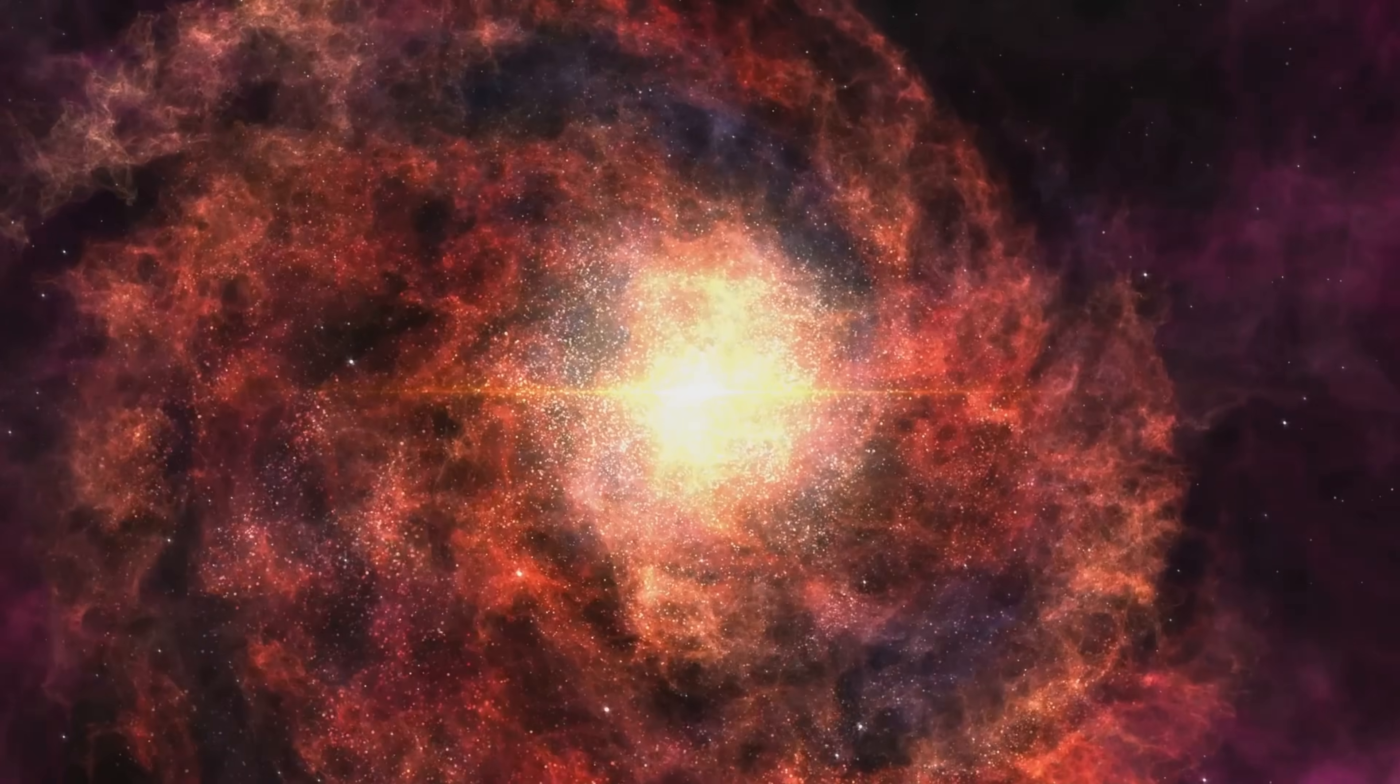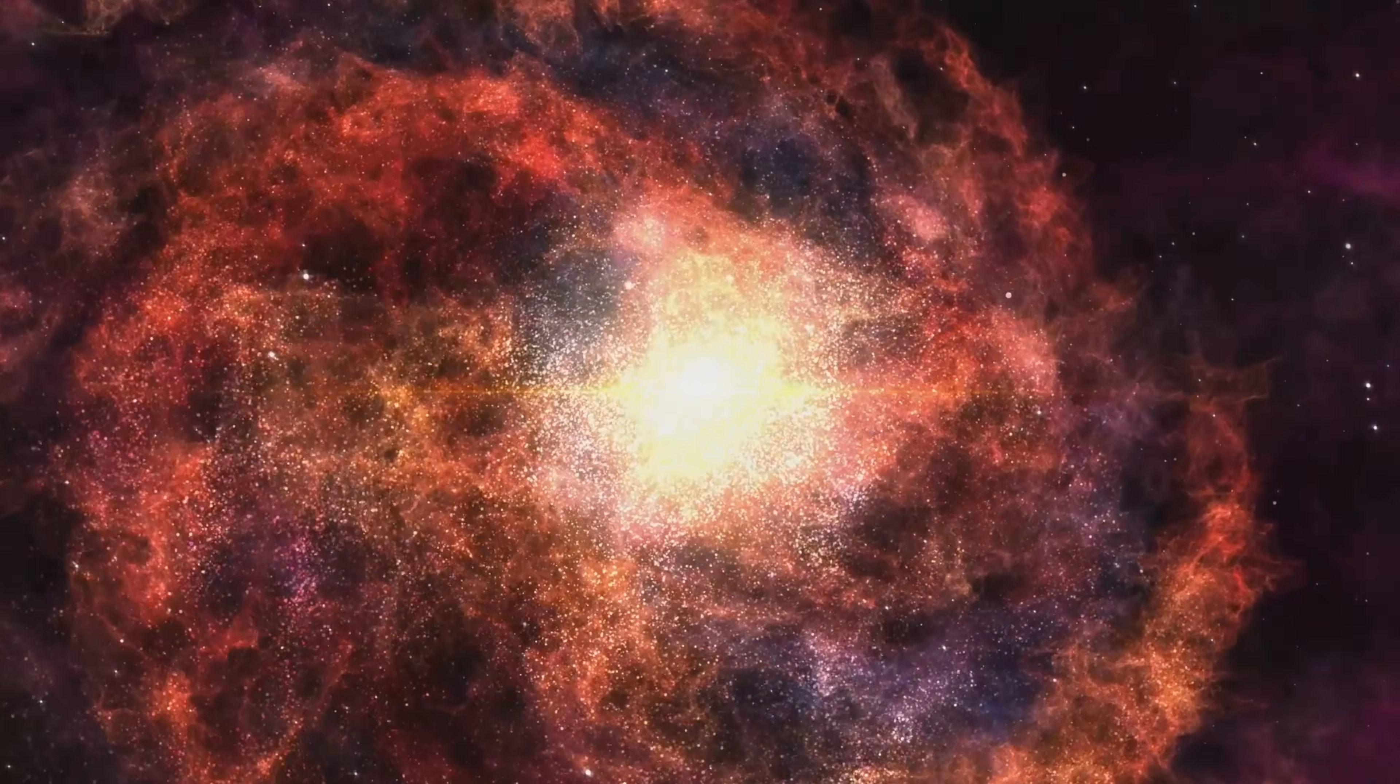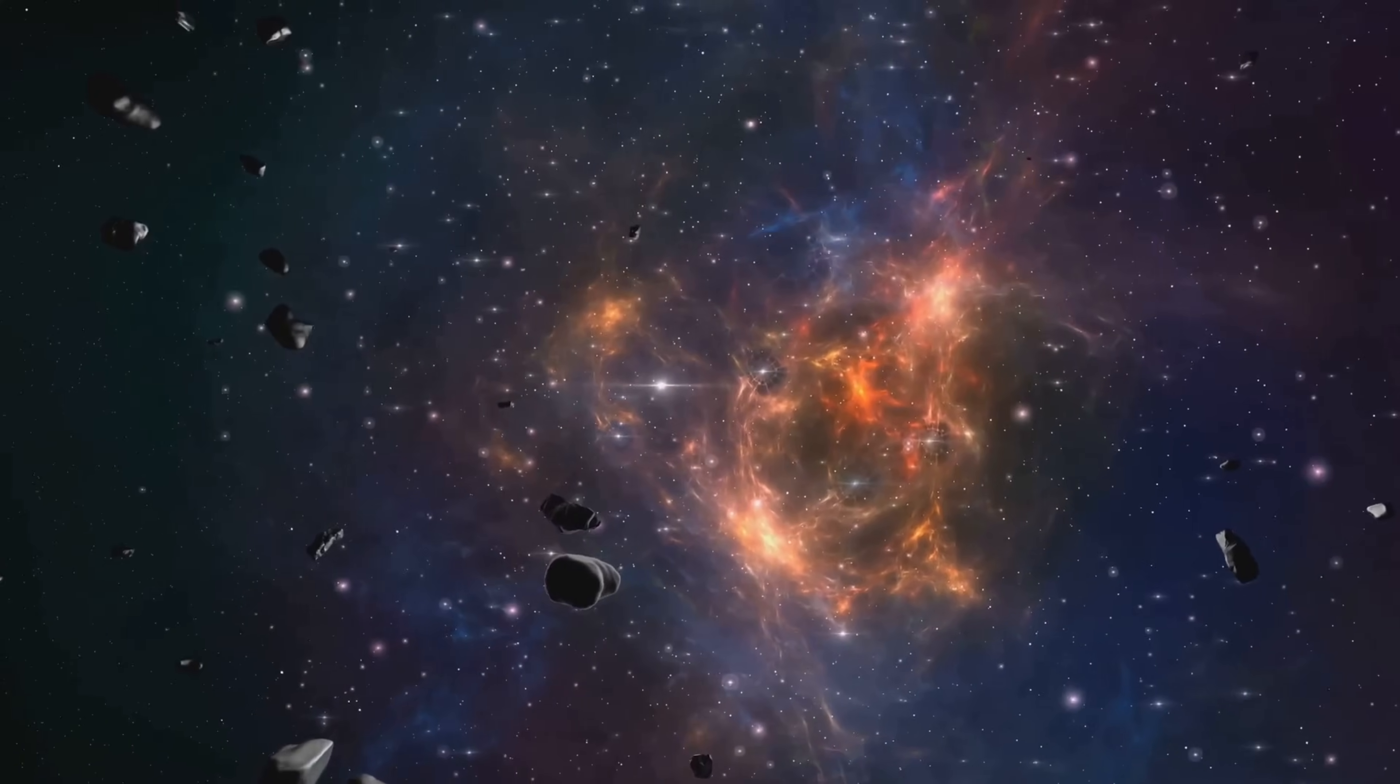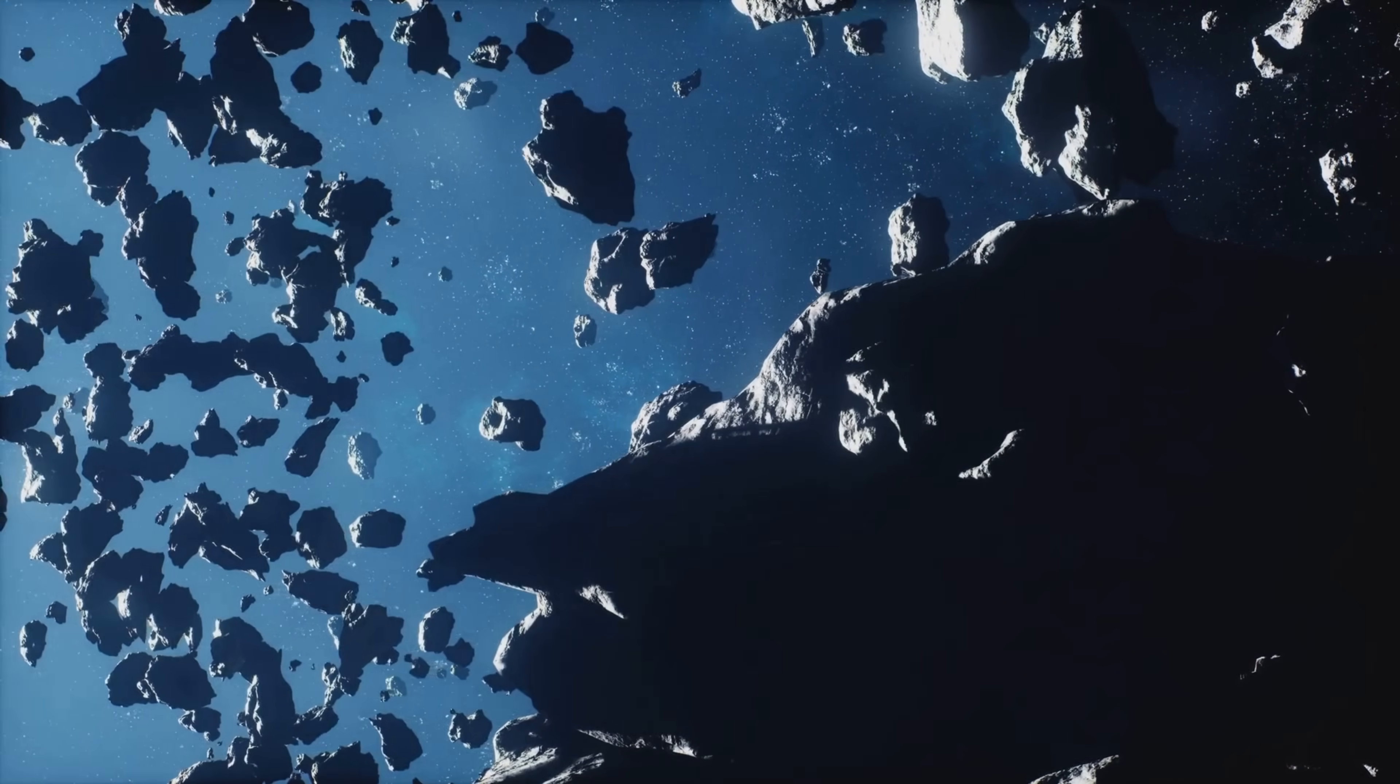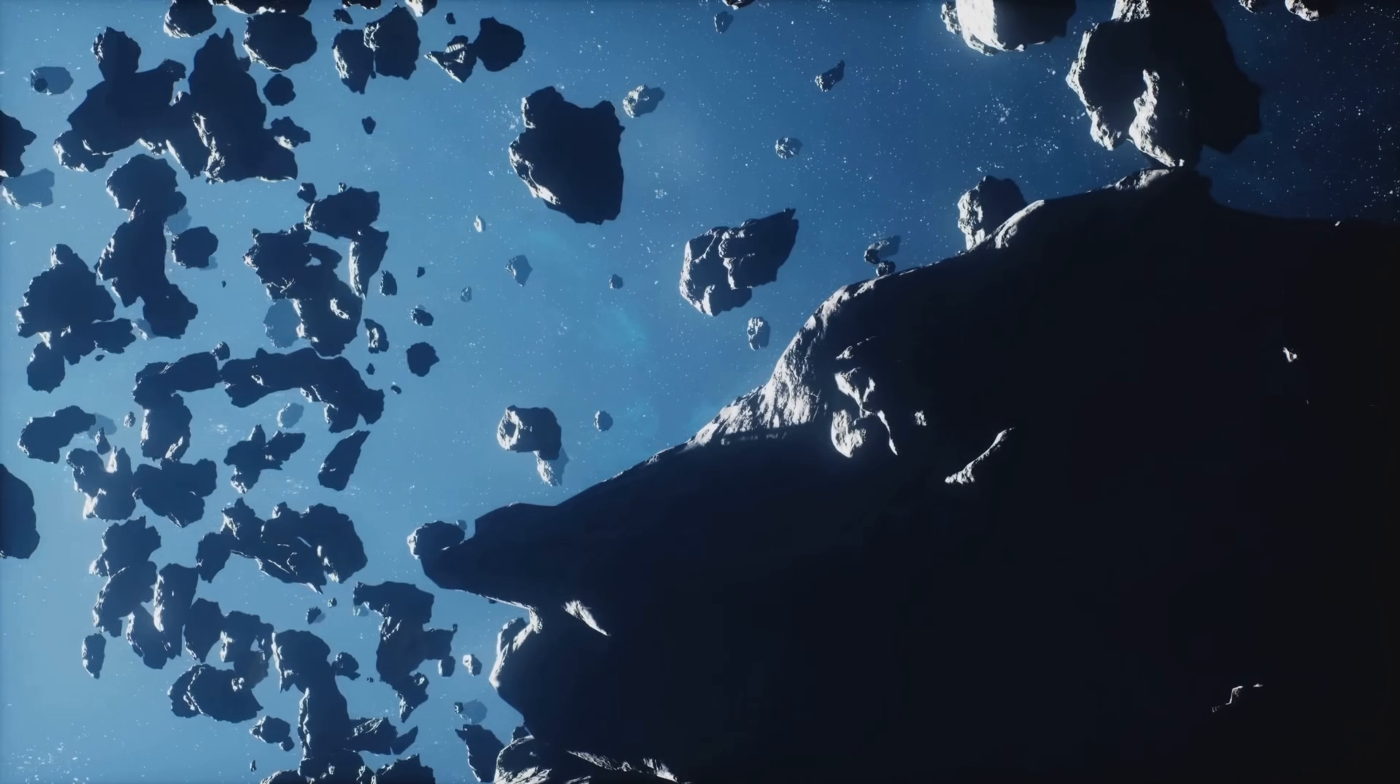Gas and dust are spread throughout galaxies, often forming beautiful nebulae. These materials are the building blocks for new stars and planets. They provide the material for new stars to form, continuing the cycle of star birth and death that has been going on for billions of years.